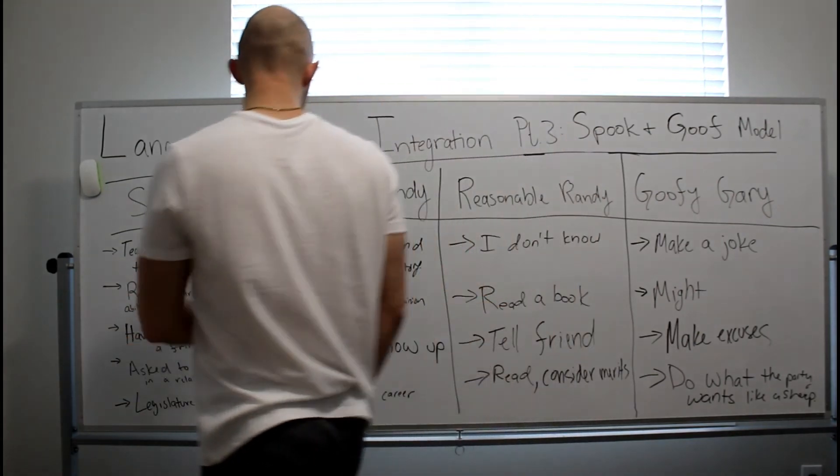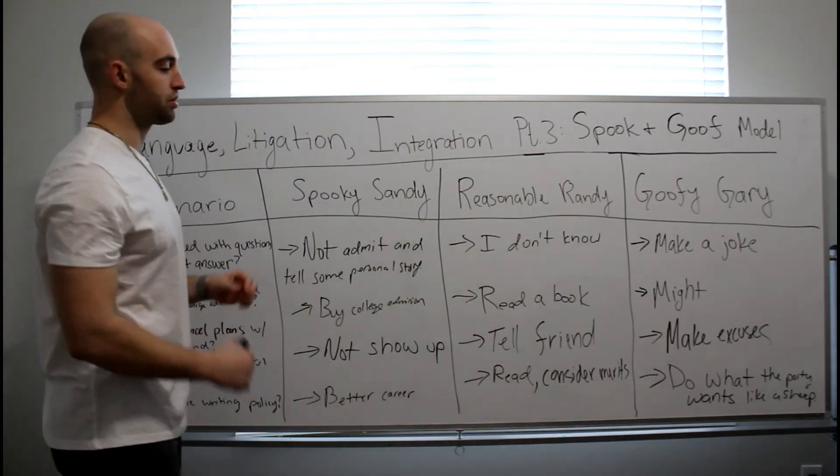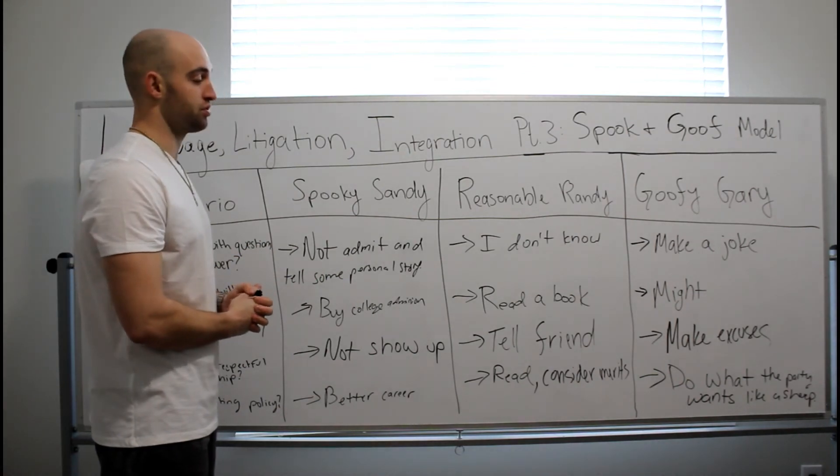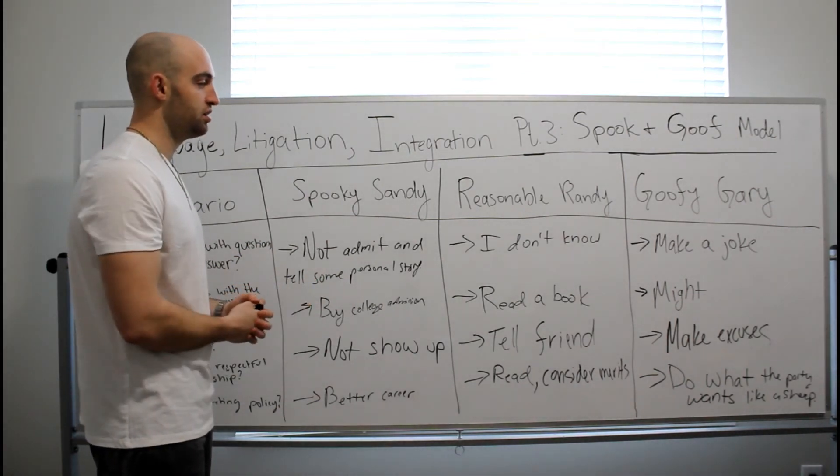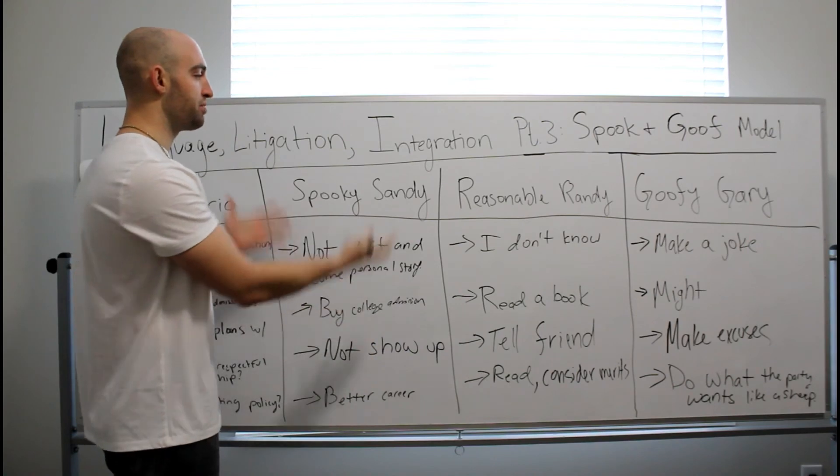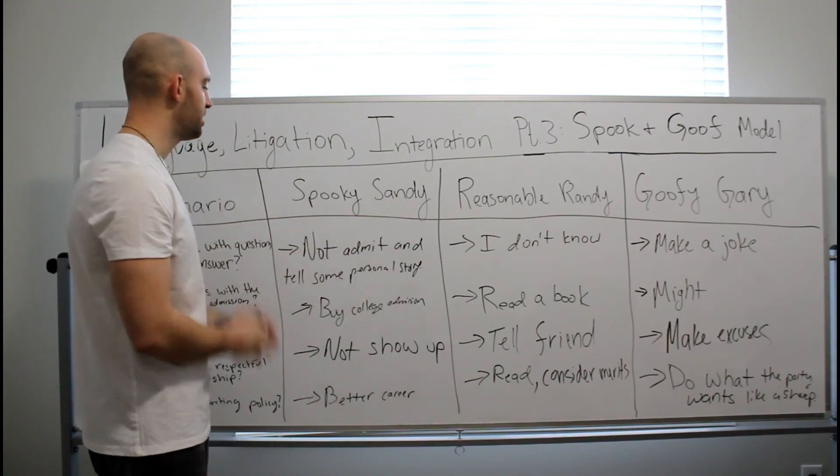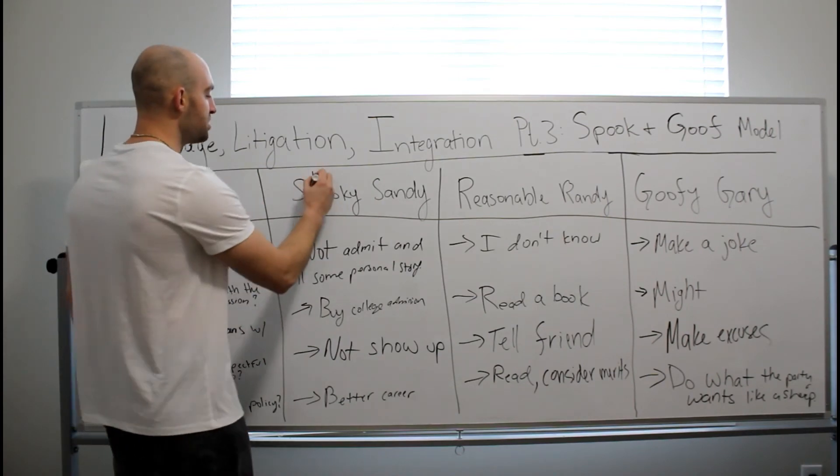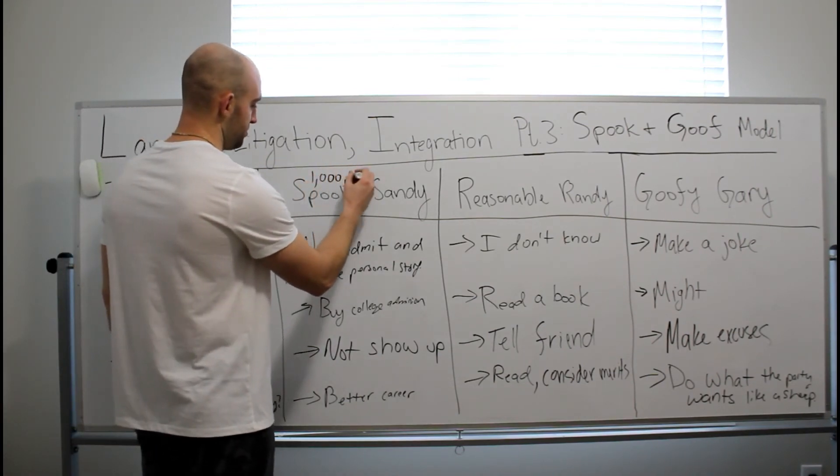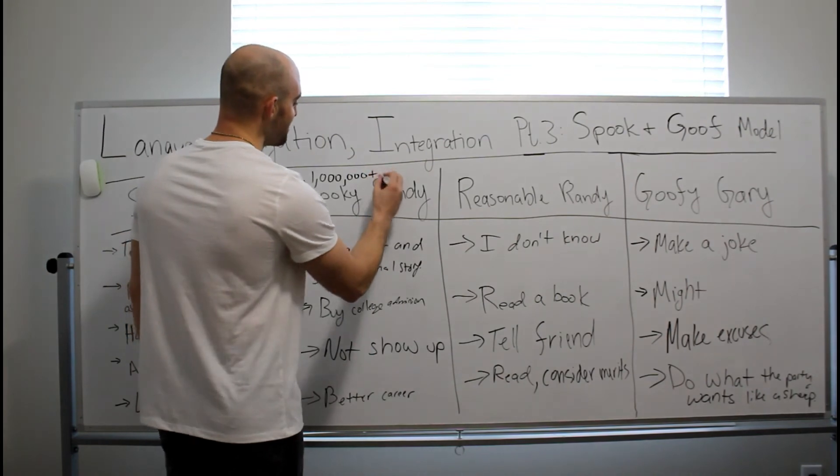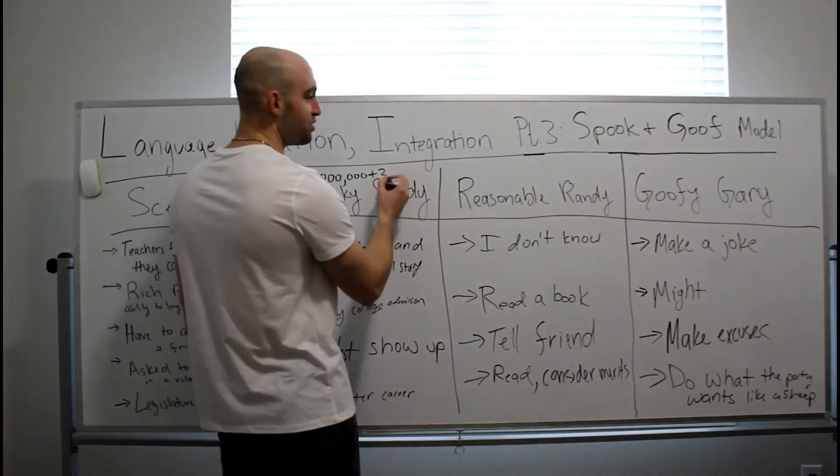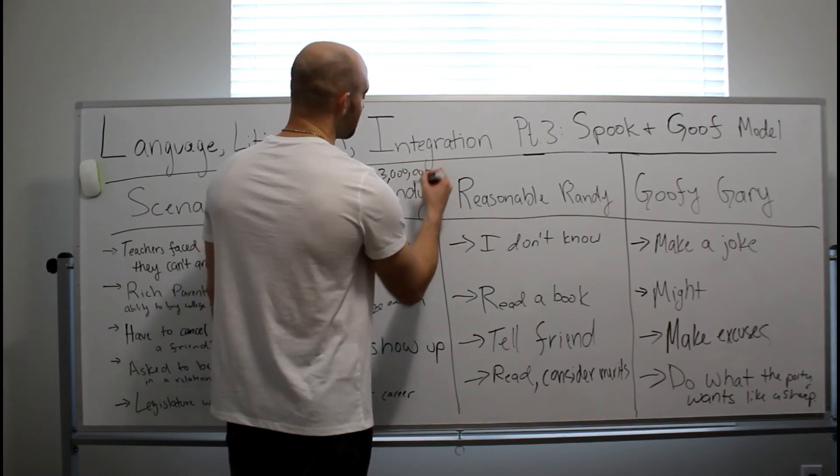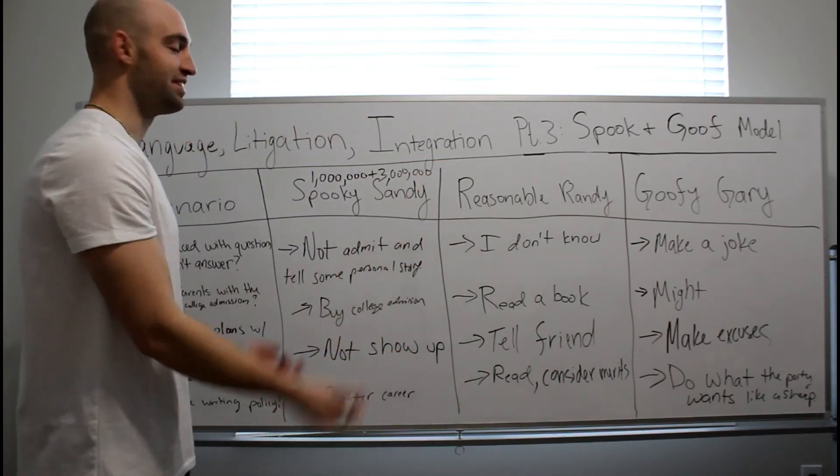And so now, again, you probably think I'm joking. Kind of joking, but not really. So now we're going to take literal articles and we're going to see which type of society and what type of characters we have in our society. Because imagine, these are just one individuals. Now imagine you have a million spooky Sandys. Plus three million Goofy Gary's. The society would be pretty fucked. And so let's have a look.